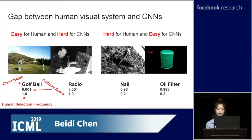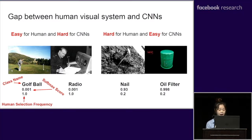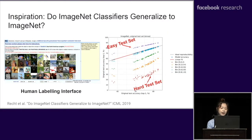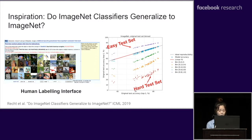These images have more textures and less objects. As we'll see in the next slide, the human selection frequency is the proportion of humans who identify the true labels. The goal of our research is to cognitively measure human visual hardness and bridge the gap between the human visual system and CNNs. An inspiring related work is 'Do ImageNet Classifiers Generalize to ImageNet?' Besides curating a new ImageNet test set, the authors also provide human selection frequency information for all testing images.